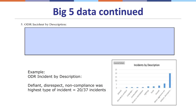The next section of the action planning template asks me to list ODRs by the incident description. Looking at the graph on the right side of the screen, the highest incident was defiance and disrespect, which received 20 of the 37 referrals to the office — a pretty significant percentage. Putting this data together, defiance and disrespect was the highest referral for the month, and I also know the most referrals came from classrooms. So I'm starting to think that defiance and disrespect occurring in the classroom might be something I want to target for intervention.